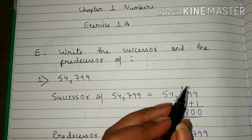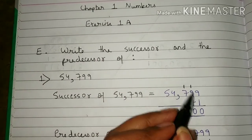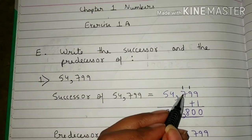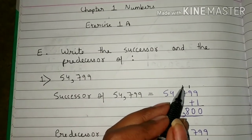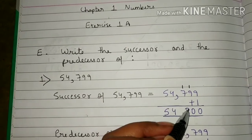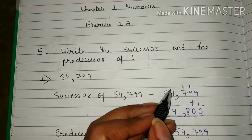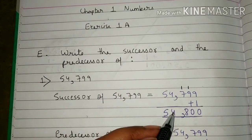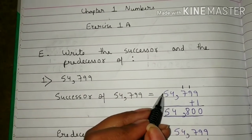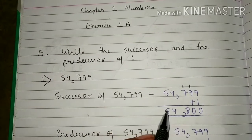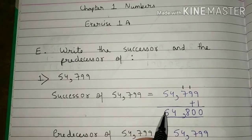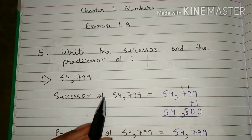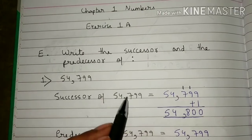Now 7 plus 1 is 8, so you will write 8 here. Then you will write 4 as it is, then 5 as it is. So 54,800 is the successor of 54,799.